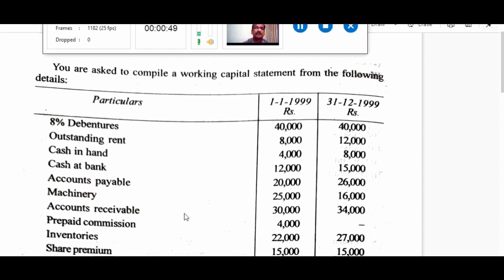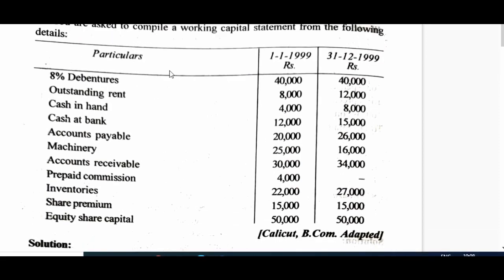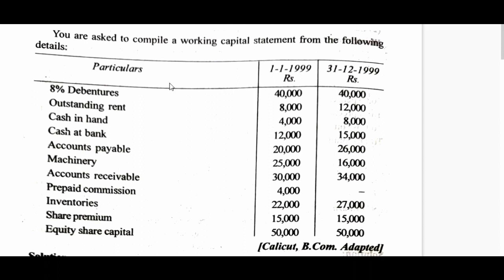Let's look at the problem. You are asked to compile a statement of working capital from the following details. You are given with the particulars — extracts from the balance sheets of a company or a business enterprise for two years. One is on 1-1-1999, meaning it is for the year 1998, and the other set of details are given for the year ended on 31-12-1999. So you have to look at this as the previous year and the other data for 1999 as the data related to the current year.